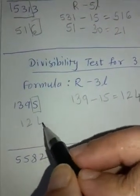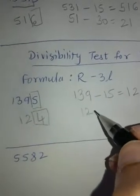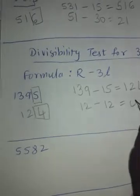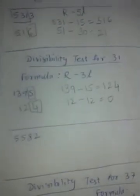Let me copy it here. This is 12, remaining number is 12, 3 times 4 is 12, answer is 0. That means number 1395 is divisible by 31.